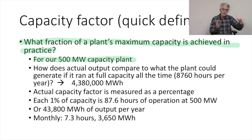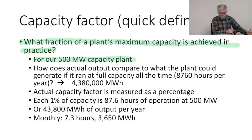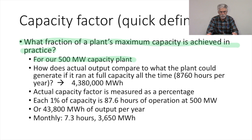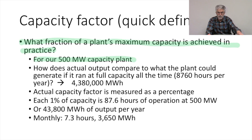The actual capacity factor is measured as a percentage of that total full capacity. We think about what the power plant actually produced and calculate the percentage of full capacity that represents. For example, if this plant were running with a 1% capacity factor instead of 100%, it would be running only 87.6 hours instead of 8,760 hours. Running at 500 megawatts for about 88 hours gives about 43,800 megawatt hours of output per year at 1% capacity.